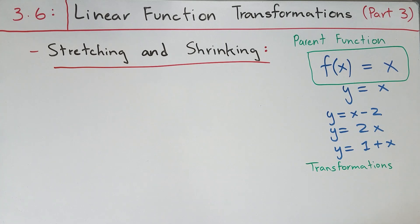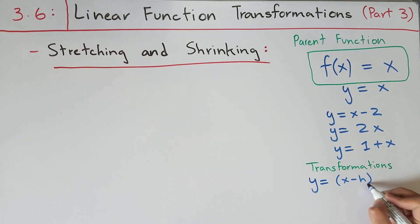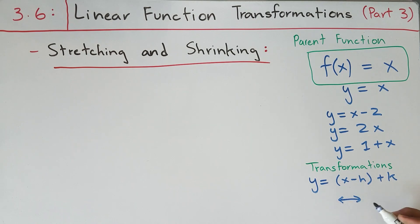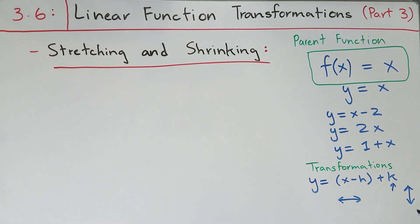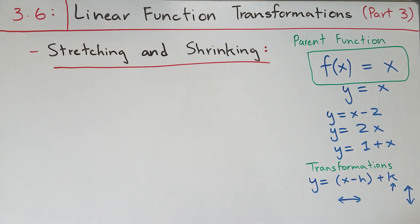Over the last two videos we also learned about linear function transformations, namely the translation transformation and the reflection transformation. The translation transformation is given by y equals x minus h plus k, where negative h is the horizontal factor — shifting the function right or left — and k is the vertical factor, determining if the function moves upwards or downwards. You can combine these, so a function like x minus 2 plus 6 shifts two units to the right and six units upward.